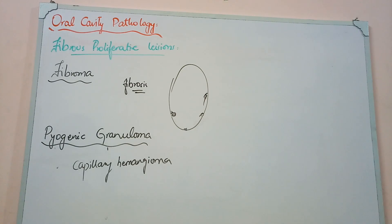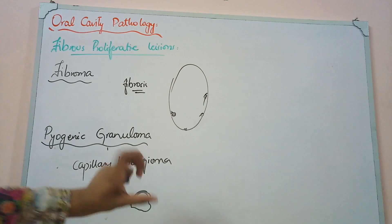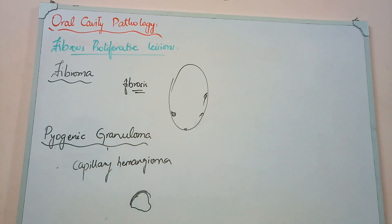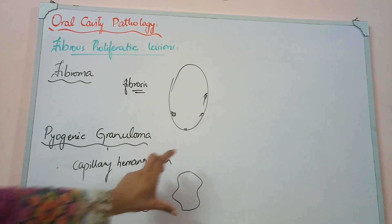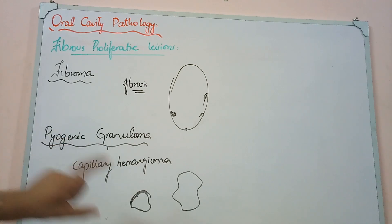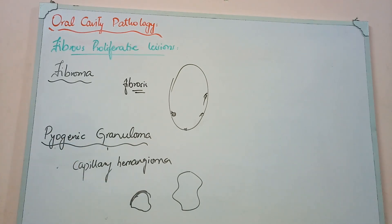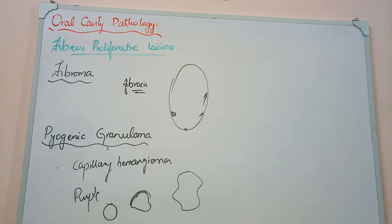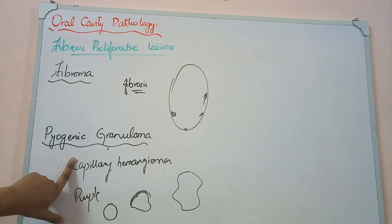In capillary hemangioma, blood is excessively collected in dilated capillaries, making them appear red or purple on the skin or mucosa. In children, these can be quite large and purple in color. When this capillary hemangioma occurs in the oral cavity mucosa, it creates a swelling or nodule with a purple or red color — that is called pyogenic granuloma.